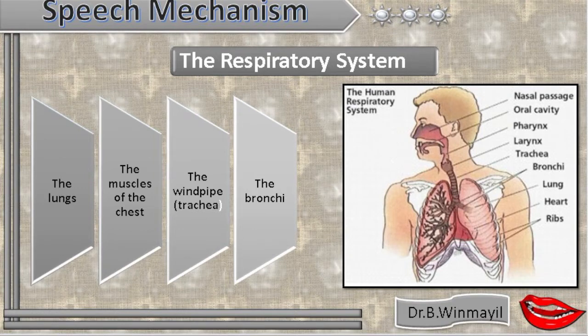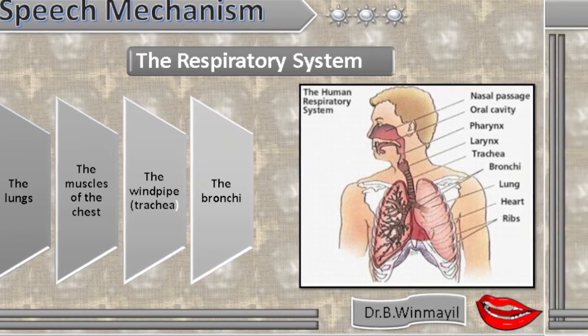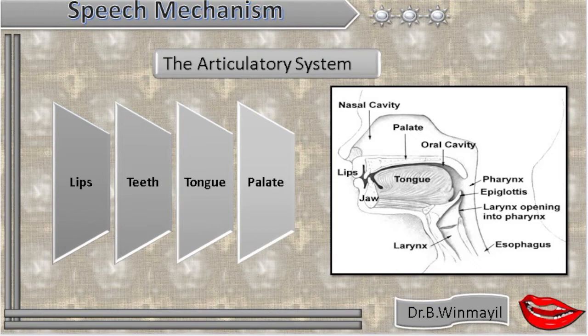The windpipe is also called trachea. And the bronchi is nothing but the bladders of lungs. Next, we have the articulatory system. It consists of four organs of speech: lips, teeth, tongue, and palate.